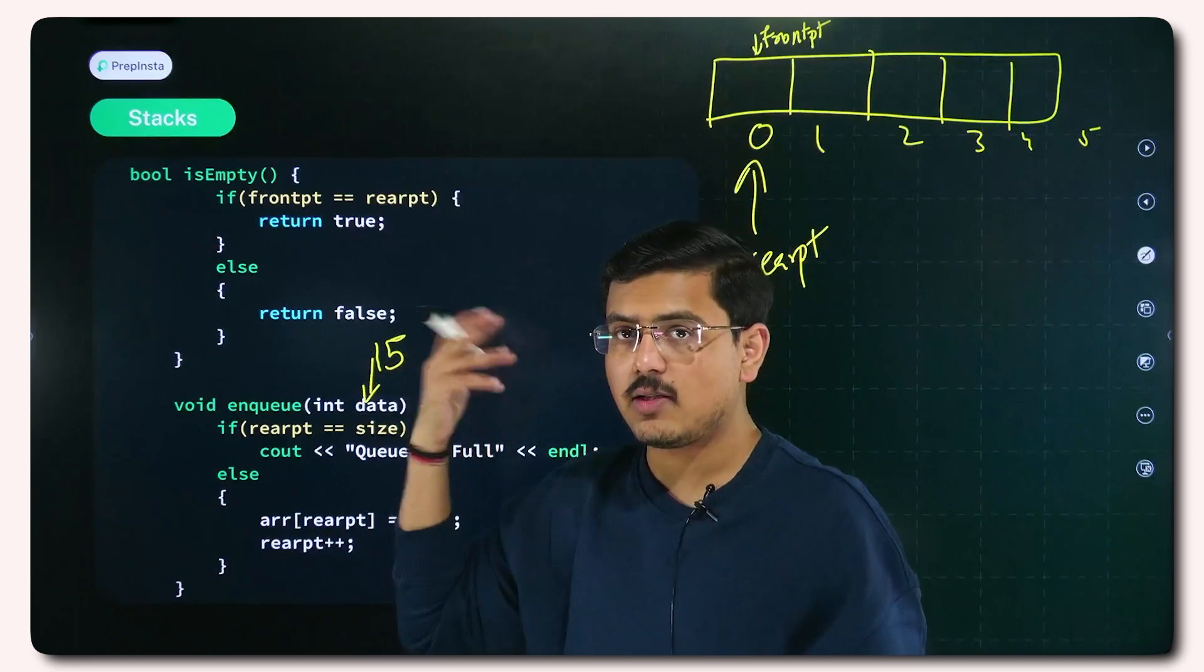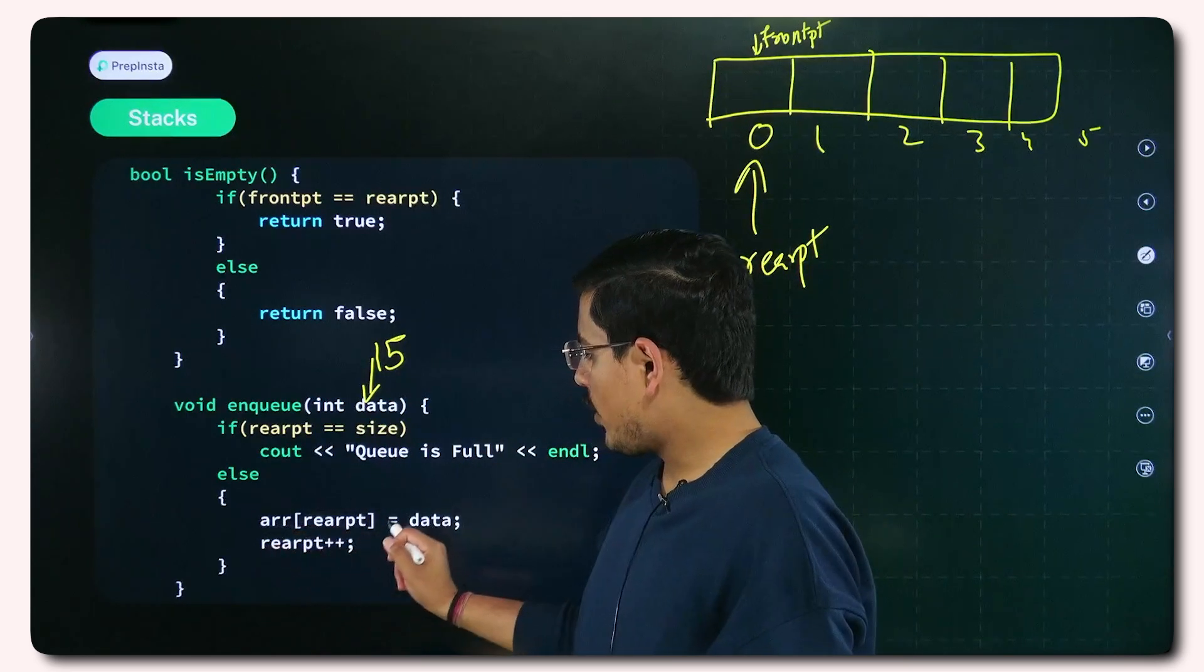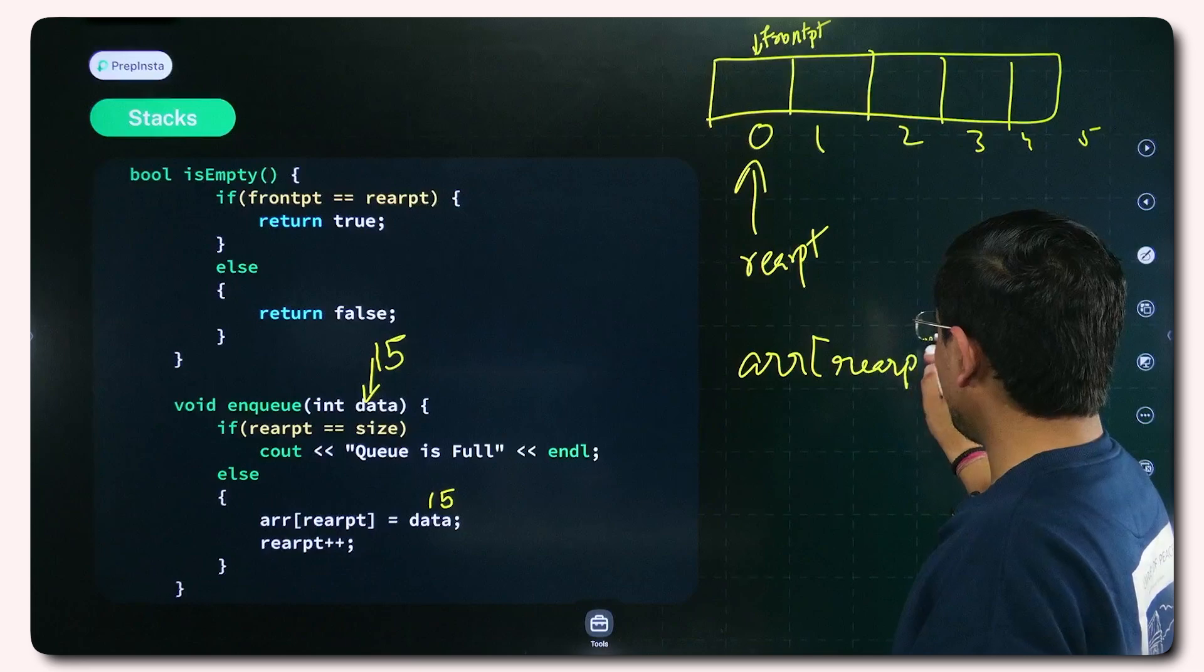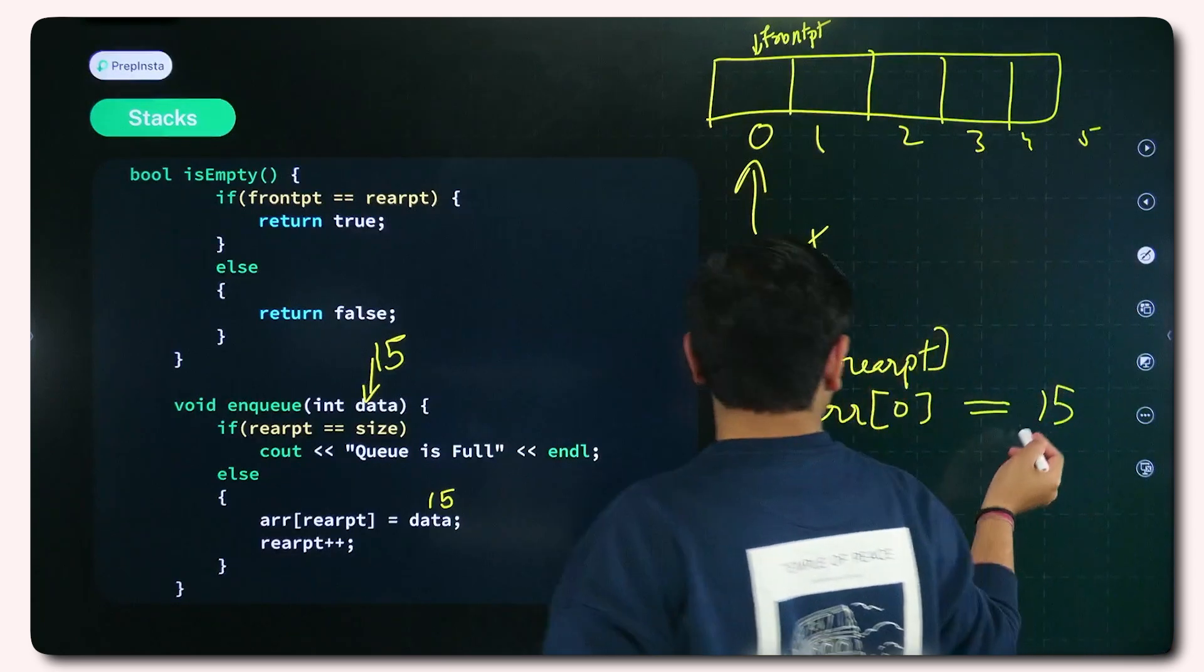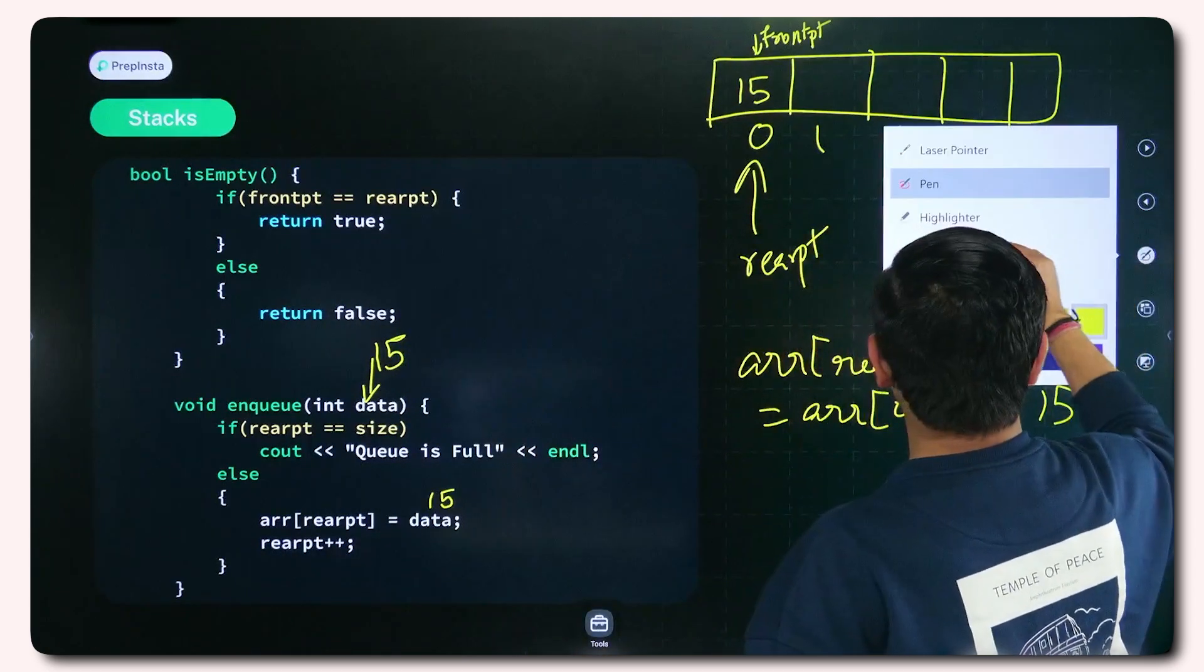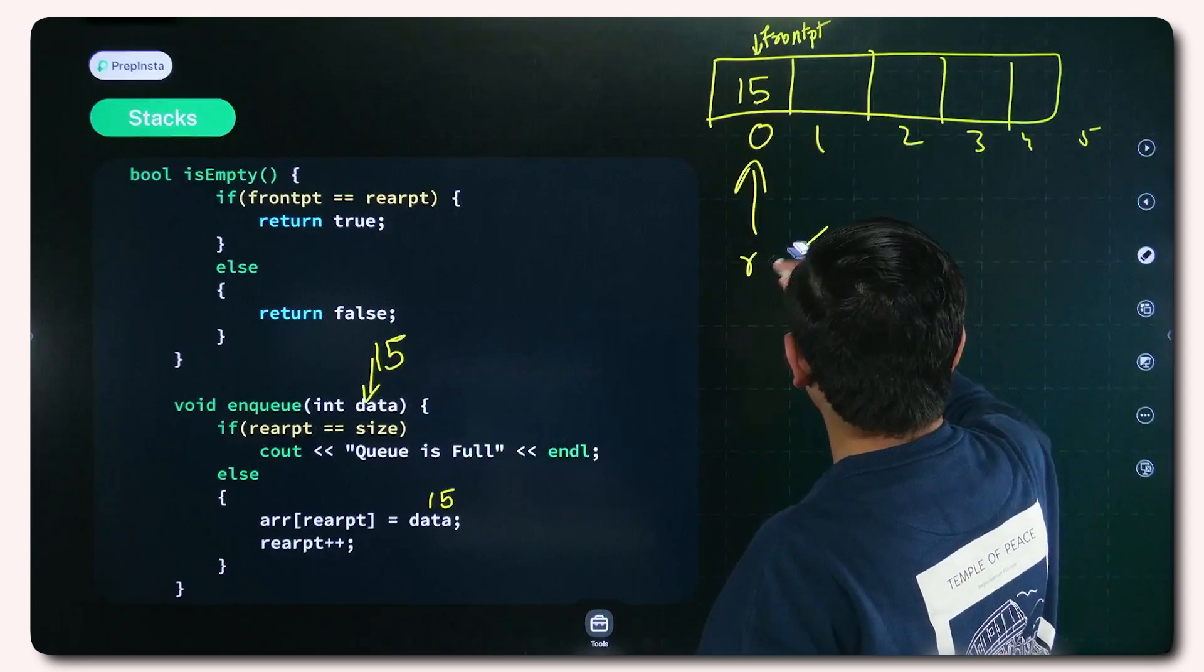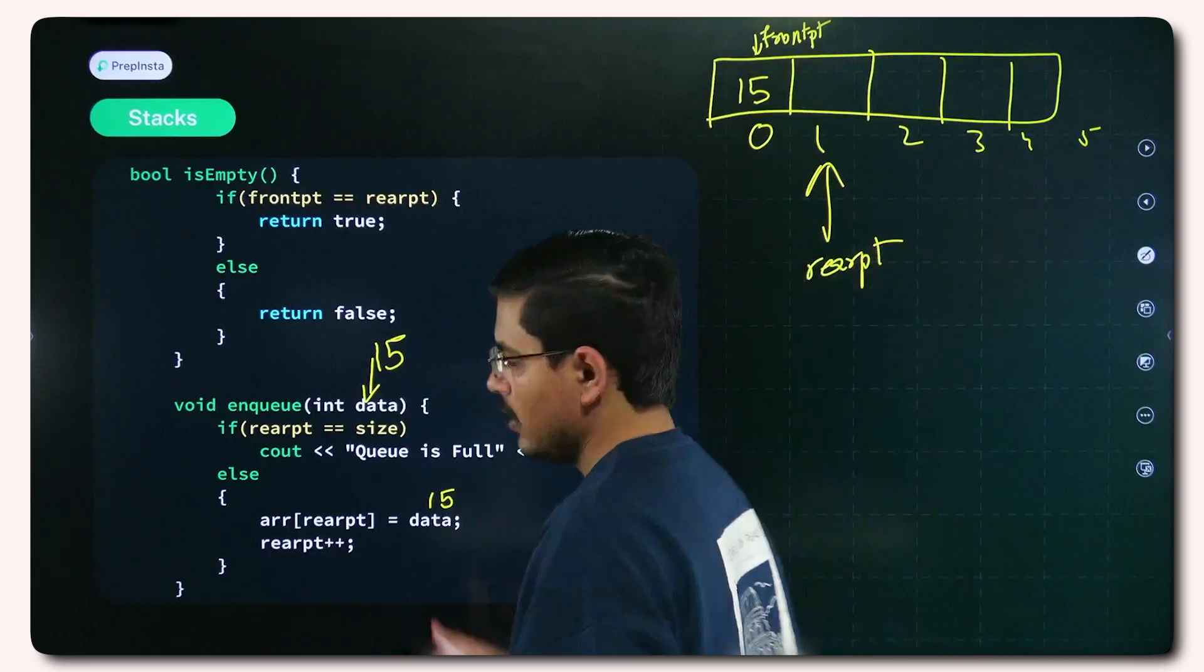If it is not like that, all you need to do is wherever rear pointer was pointing, you add data to it and then you increment. First say that you had 0 on the rear pointer, rear PT is set here, front PT is also set here. If you correctly remember, we had initialized front PT and rear PT as 0. When we initialized both of them at 0, in that case both were pointing to index 0. When I want to enqueue something, addition happens from rear end. At the location of rear pointer I add this data. Consider that data is 15, 15 is the value we want to enter in queue. At this place, array of rear PT which is nothing but array of 0, I assign 15, so 15 comes here. Another step is rear PT plus plus, which means increment the rear PT. So I increment it immediately.